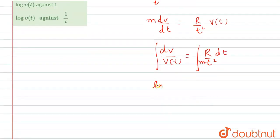So we get this value as ln of V, and this value will become minus R upon integration of this function. This will become minus mt because we know integration of 1 upon t square dt will be equal to minus 1 upon t.